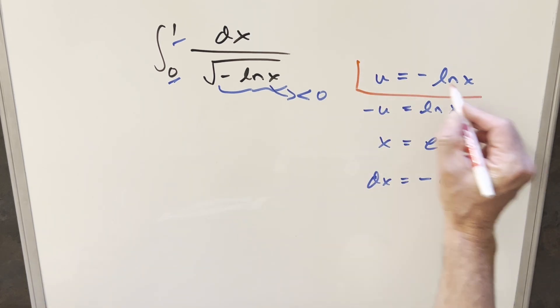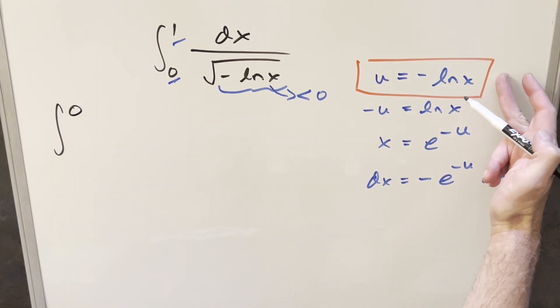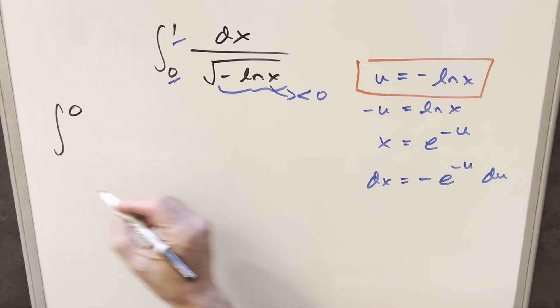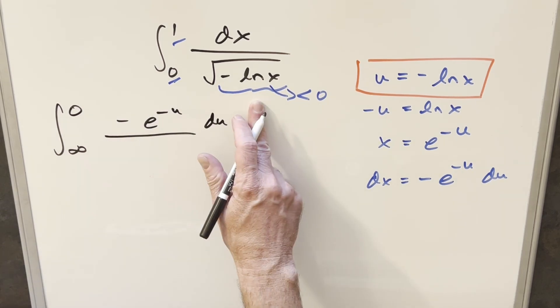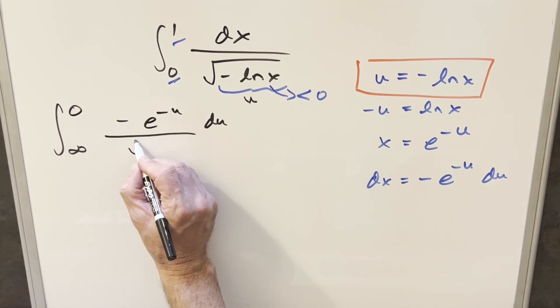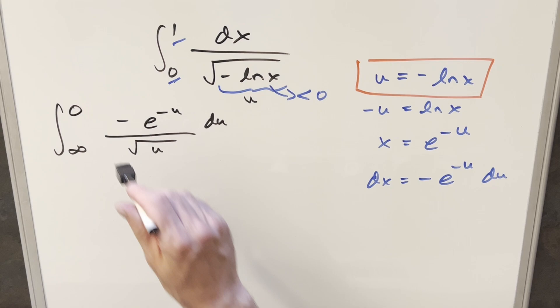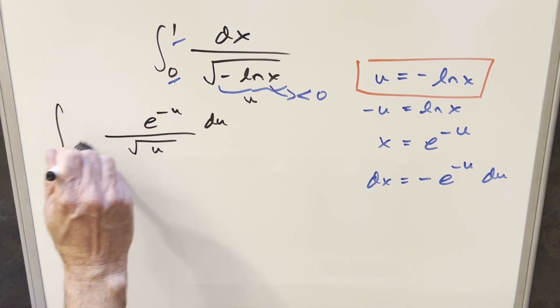Let's use this to substitute. First, plugging in 1: natural log of 1 is 0, so the upper bound is 0. Plugging in 0: natural log of 0 is minus infinity, times minus gives positive infinity. dx becomes minus e to the minus u du, and the radical becomes square root of u. We can use the minus sign to swap our bounds, getting the larger value on top.